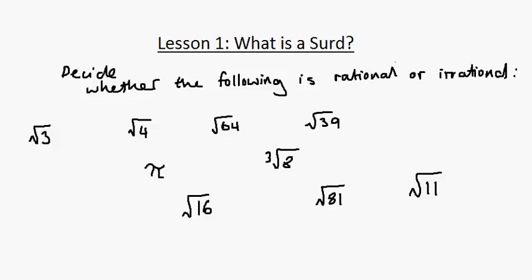Okay, so the first one, root 3, is irrational. We went over this in the first example. The second one, root 4, is rational because the root of 4 is 2. The square root of 64 is 8, so it's rational. The square root of 39 is something like 6.2, but as long as you know that it's not a perfect square or it doesn't have a square root which is an ending decimal, then it's irrational.